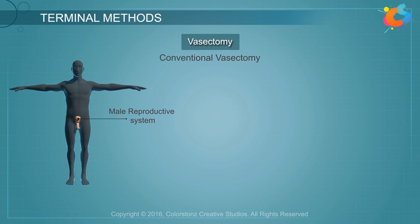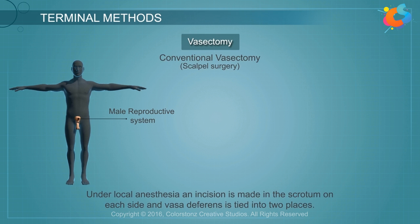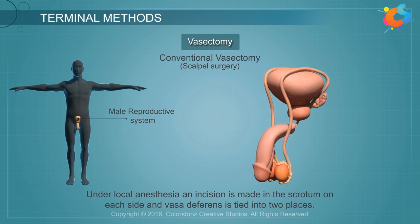Conventional vasectomy, also known as scalpel surgery: under local anesthesia, an incision is made in the scrotum on each side, and the vas deferens is tied in two places. Then the portion between the two places is cut off.